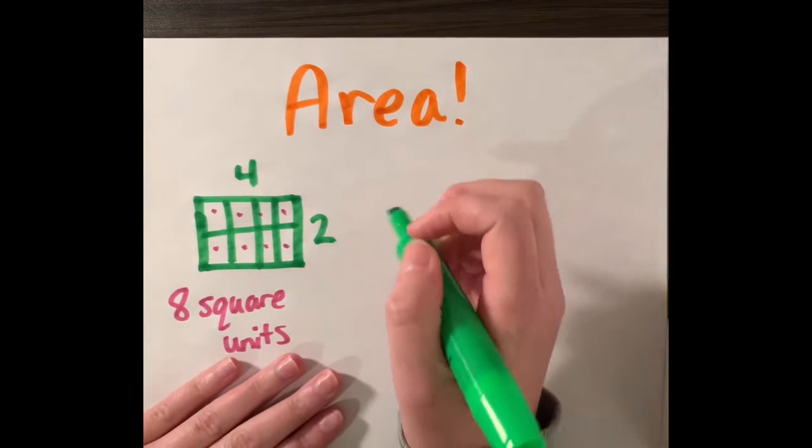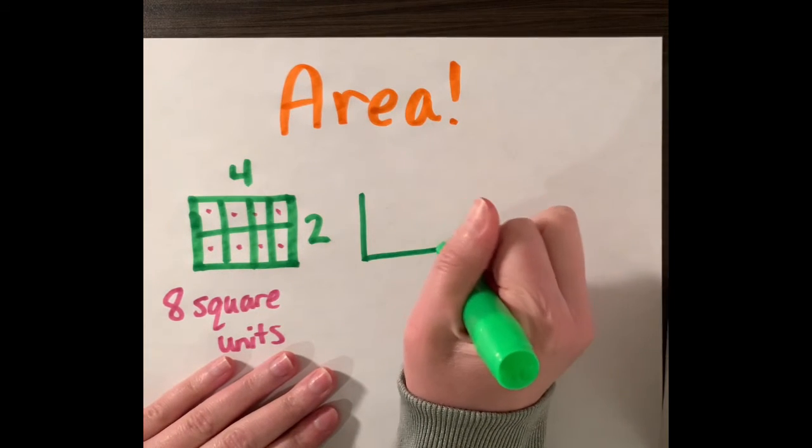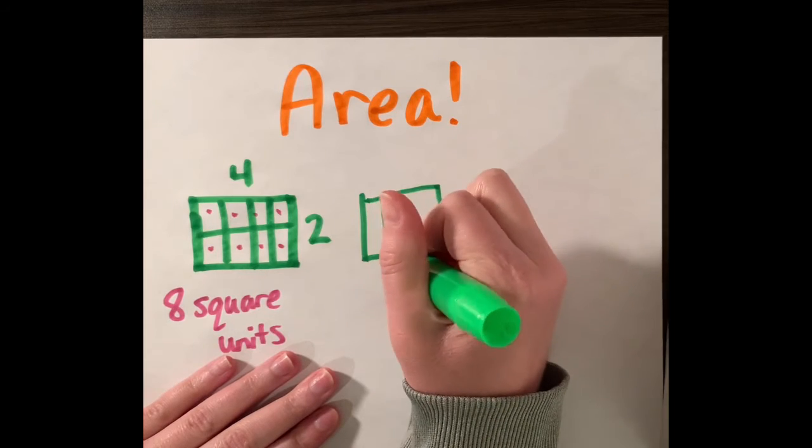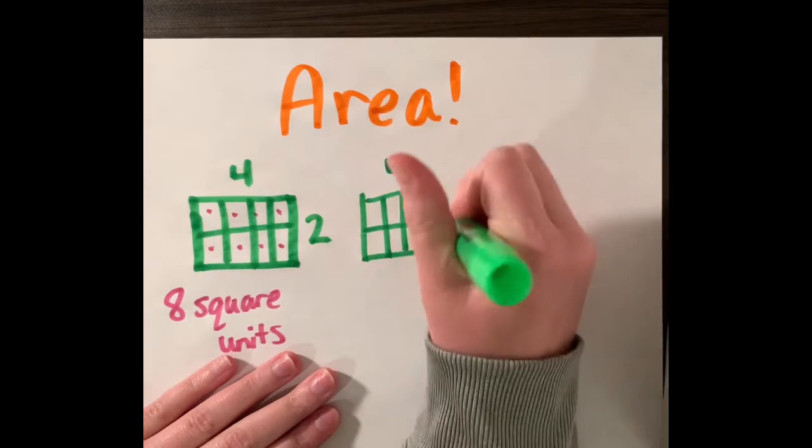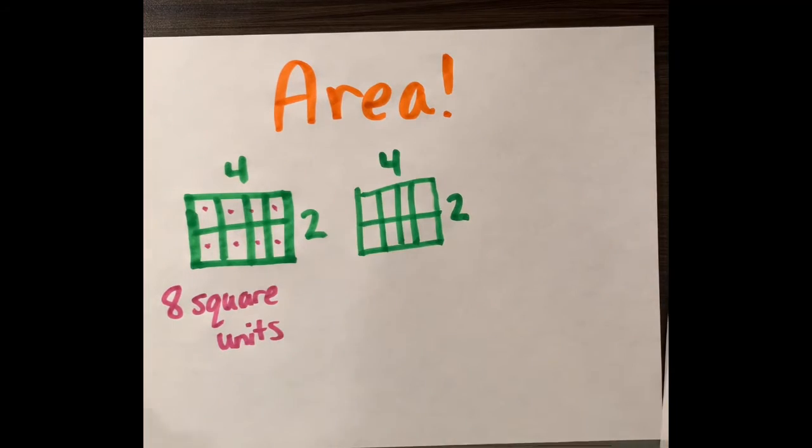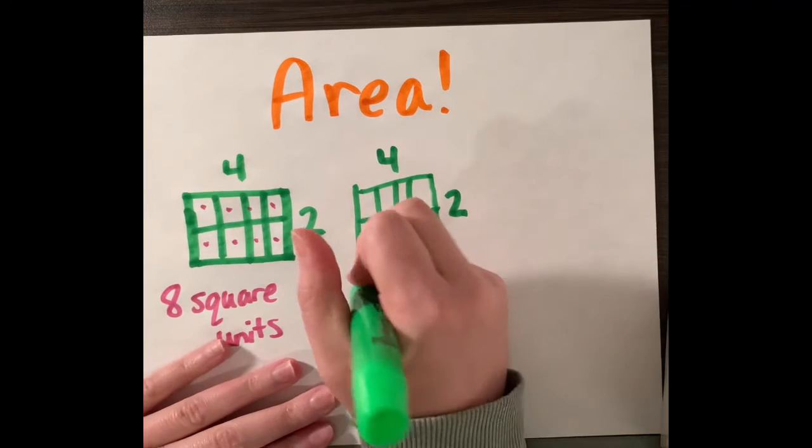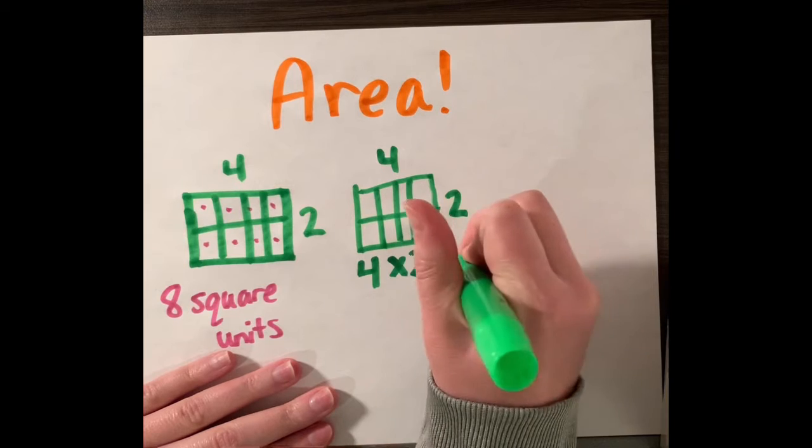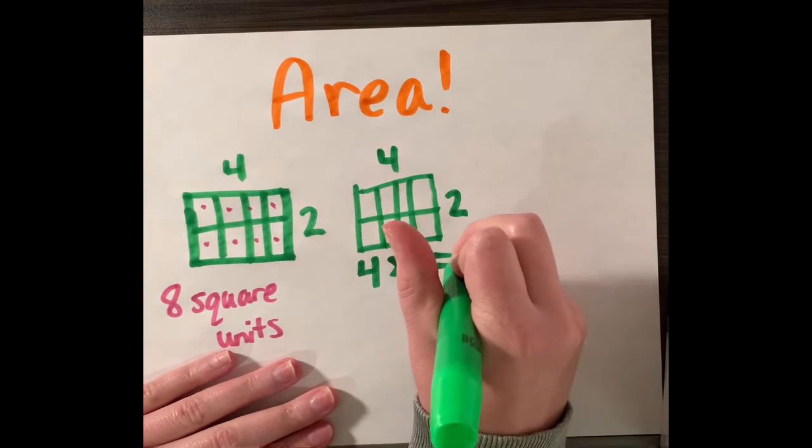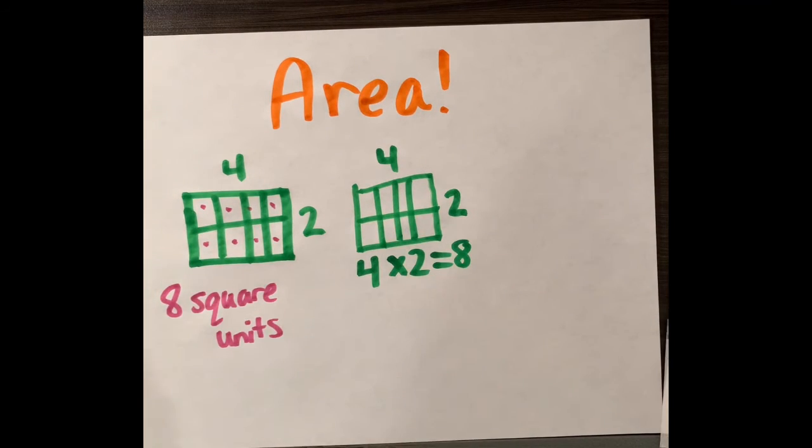Now we are going to try using multiplication. I find that multiplication can be the quickest way to find the area of a figure. Once again we have that four by two square here and four by two is equal to eight if I can use my rote memory. If not I can use my skip counting and do two, four, six, eight and get the same answer. Once again we have a figure that is eight square units.